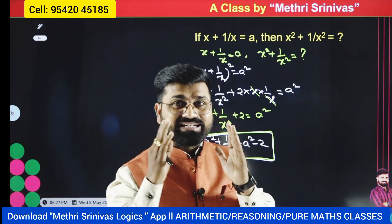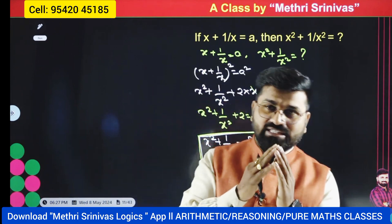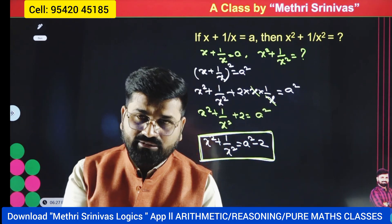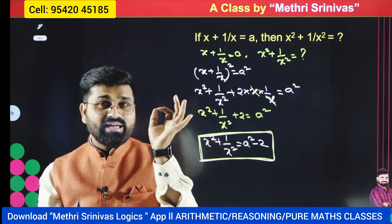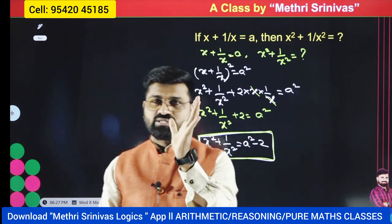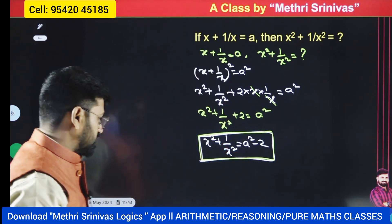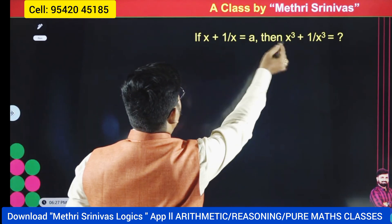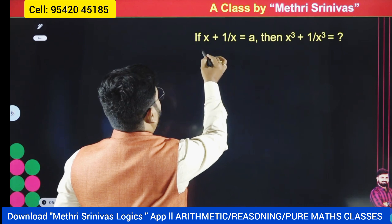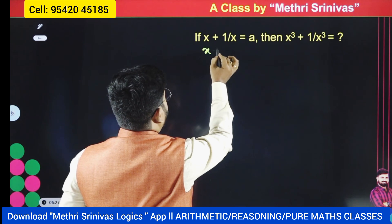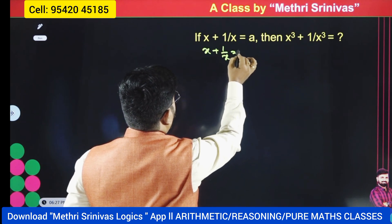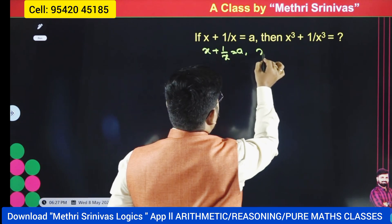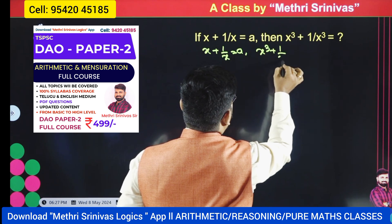Remember from now onwards: whenever they give x plus 1 by x is equal to a and ask for the square, then it is a squared minus 2. That's it. Whenever you have plus here, you will get minus 2.